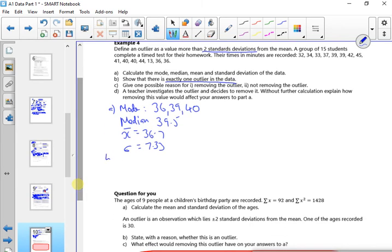So I'm going to use x̄ plus or minus 2σ, this time not 3. So it's something that's less than 36.7 minus 2 times 7.33, so that's less than 22.04. So that gives me, to show that there's exactly one outlier, this one gives me an outlier here, less than 22 is 13, so 13 is an outlier.